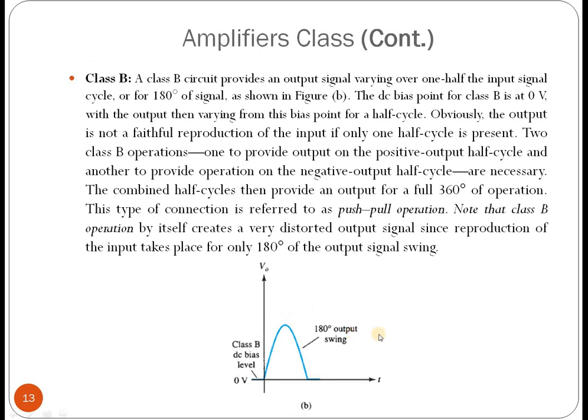Class B amplifier provides an output signal varying over only one half of the input signal cycle — that is, 180 degrees. The DC bias level is zero voltage, so only one half portion is achieved. To reproduce the full cycle, two Class B stages are used together: one provides the positive half cycle and the other provides the negative half cycle. This combination is referred to as push-pull operation.